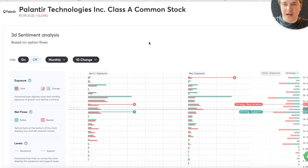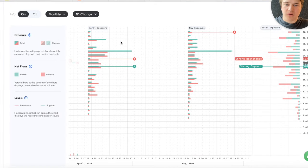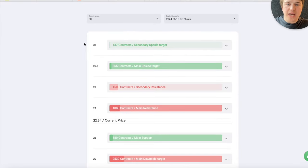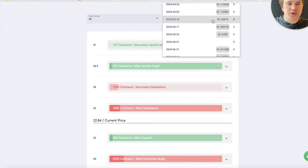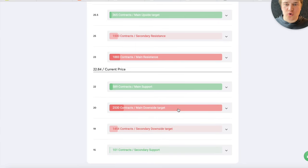And so here it is we have Palantir Technologies sentiment analysis on Visual Sectors. Here I am logged in and basically what we see is the options chain analysis showing strong resistance, strong support. What I really want to show you today is basically looking at the options chain for May 10th, 2024 which is the first options chain after Palantir's earnings on May 6. So what do we see here? The main upside target is $25.50 and the main downside target is $20.